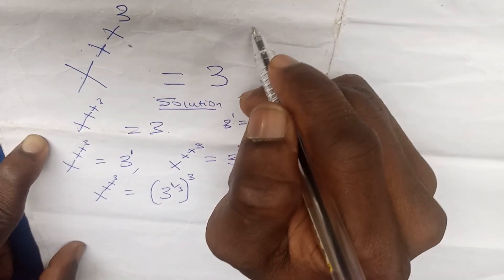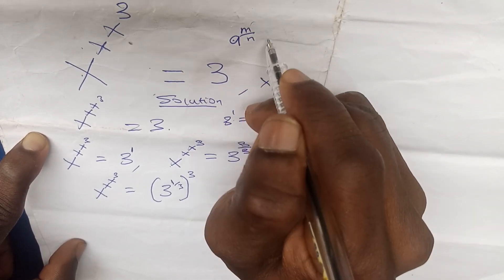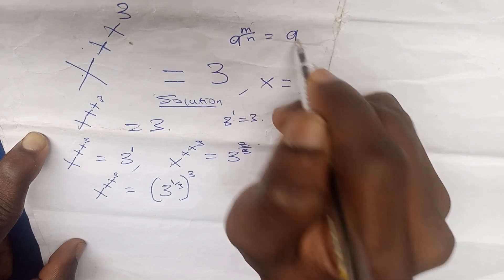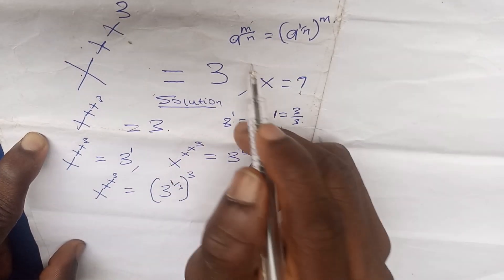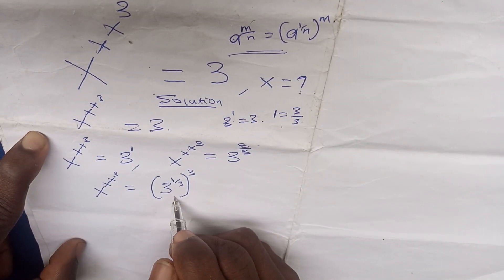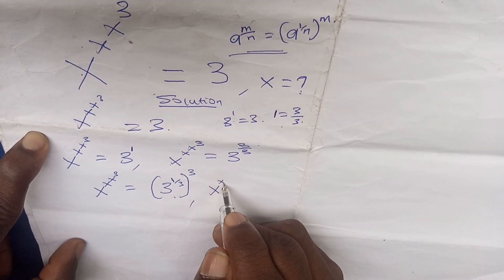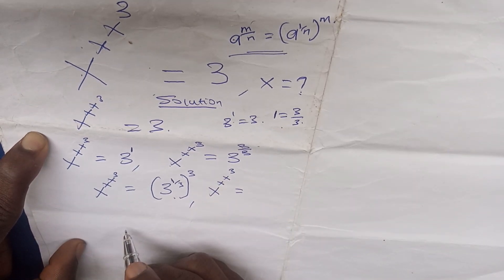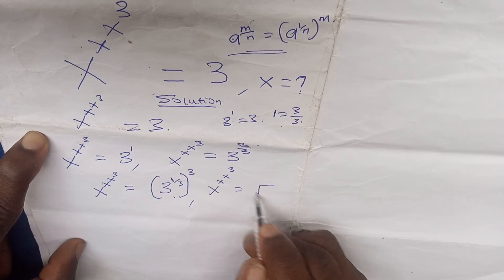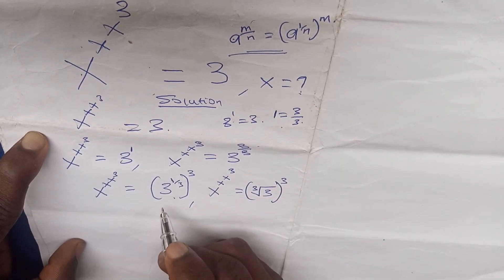The principle of indices says: if you have a to the power of m over n, we can write this to be a to the power of one over n, to the power of m. This rule is what we applied at this point. So we can have x to the power of x to the power of x to the power of three is equals to the cube root of three, to the power of three.